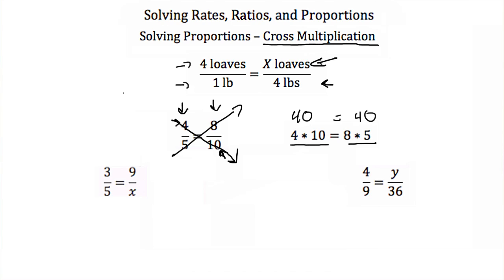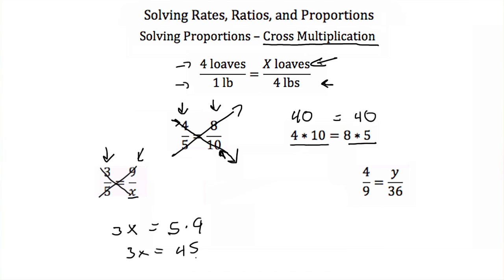Let's look at some examples. Here I have the ratio 3 over 5, and I want to maintain the same proportion with another ratio, which is 9 over some unknown number. You can use cross multiplication: 3 times x has to equal 5 times 9. Well, 5 times 9 is 45, so 3x equals 45, and dividing by 3, x equals 15. So if I want to keep 9 over some number in the same proportion as 3 over 5, the denominator has to be 15. So 3 over 5 is in the same proportion as 9 over 15.